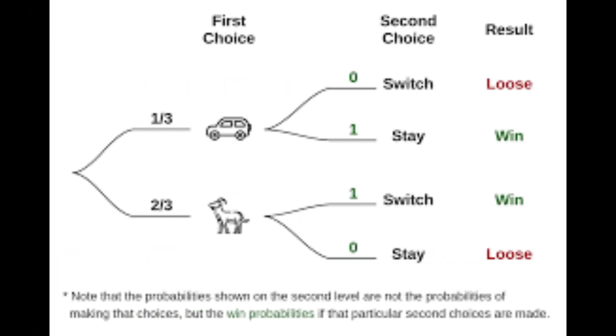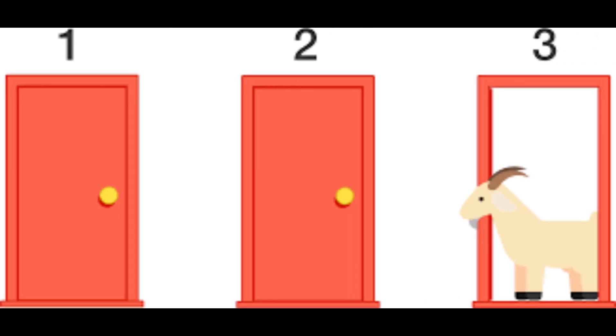Scenario two, you switch doors. If your initial pick was a goat, which happens two-thirds of the time, switching means you win the car. If your initial pick was the car, which happens one-third of the time, switching means you lose.